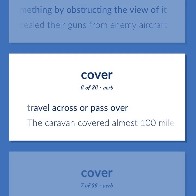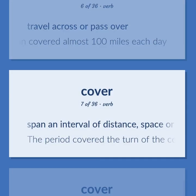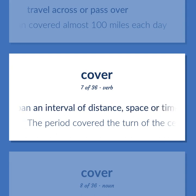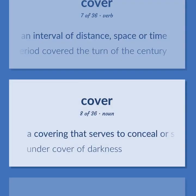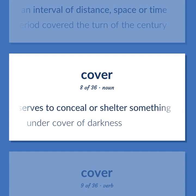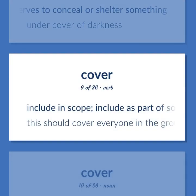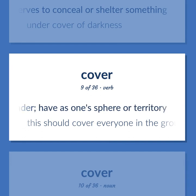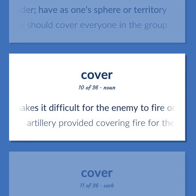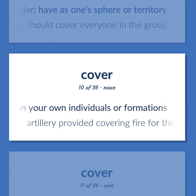Travel across or pass over — the caravan covered almost 100 miles each day. Span an interval of distance, space, or time — the period covered the turn of the century. A covering that serves to conceal or shelter something — under cover of darkness. Include in scope, have as one sphere or territory — this should cover everyone in the group. Fire that makes it difficult for the enemy to fire on your own individuals or formations — artillery provided covering fire for the withdrawal.